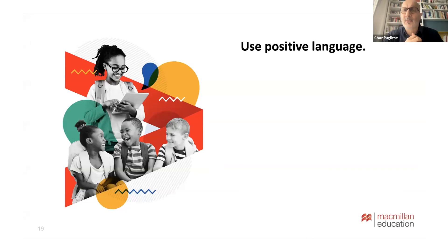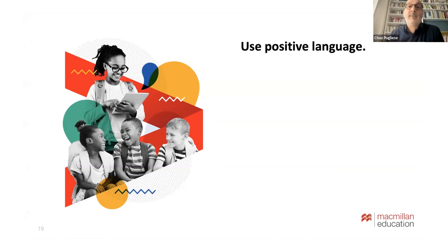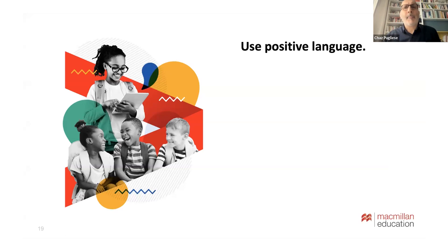Positive language doesn't mean highlighting only what's good — it means finding balance. When you spend too much time correcting mistakes, you don't have enough time to highlight what students do well, and the message you send is: I'm only interested in your mistakes. Most people, when they think of feedback, only think about correcting mistakes. All these things — feedback, effort-based praise, positive language — can contribute to a more positive climate, which we know can increase student motivation.